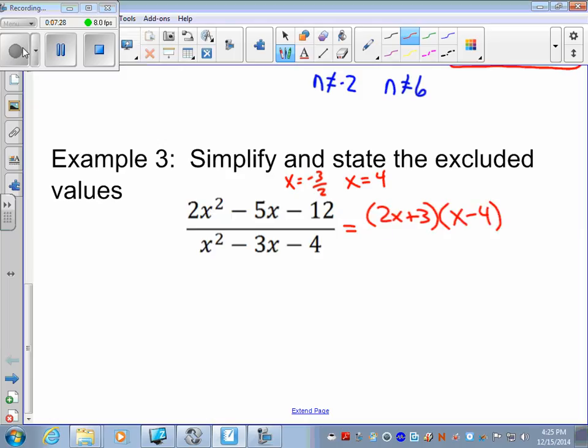In the denominator, we have a leading coefficient of 1. This is much easier just to do what times what is negative 4. That adds up to negative 3. And we're going to set this up with x in the first spot of each binomial. And what times what is negative 4? That adds up to negative 3. That's negative 4 and 1.